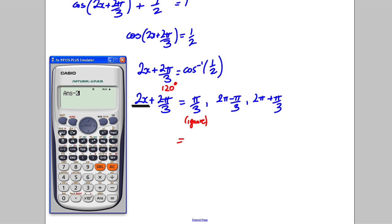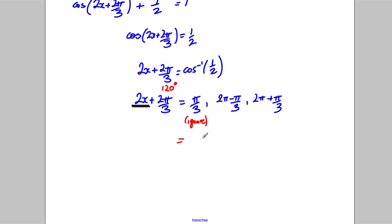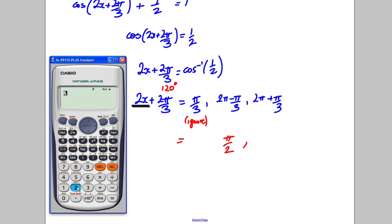What about this one? So we've got 2 pi subtract pi by 3 like that, then we're going to take off 2 pi over 3, and I'm going to then halve it. So I get pi by 2 as an answer. So this one gives me pi by 2.